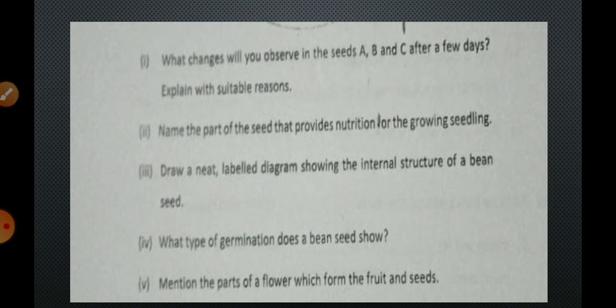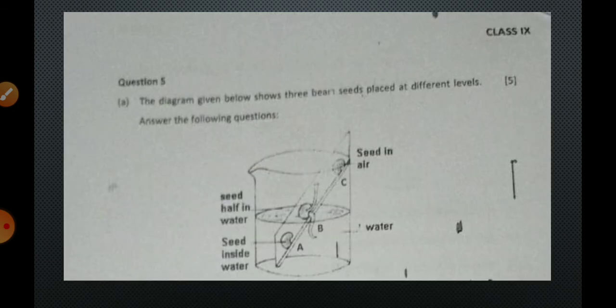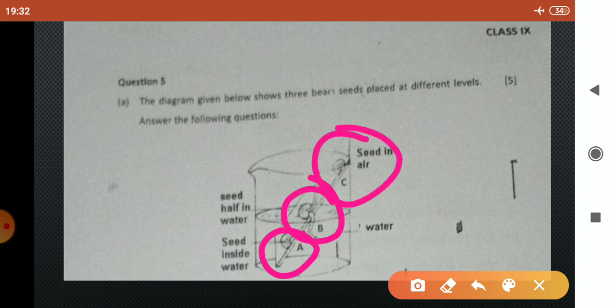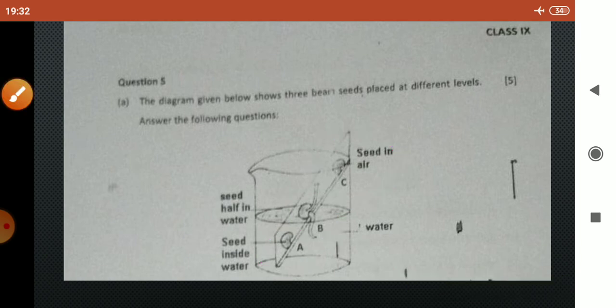What changes will you observe in the seeds A, B and C after few days? The seed A will receive water along with very small amount of air dissolved in the water. Therefore it will not germinate properly. A very small amount of radical or plumule emerges and then it stops germinating. Seed B receives water and oxygen properly, therefore proper germination will occur. Seed C is present at the top receiving only air and no water, therefore no germination.